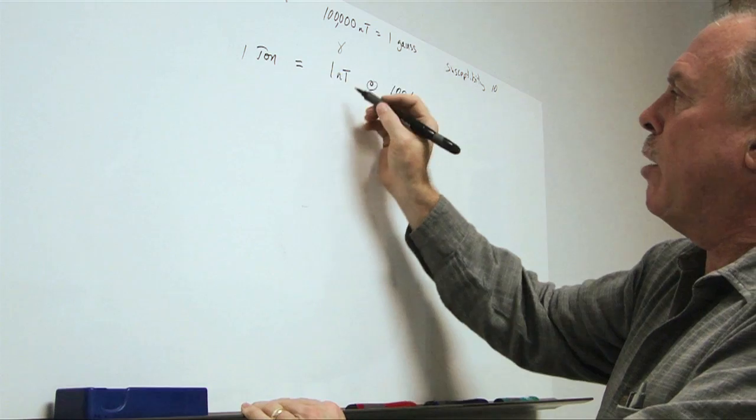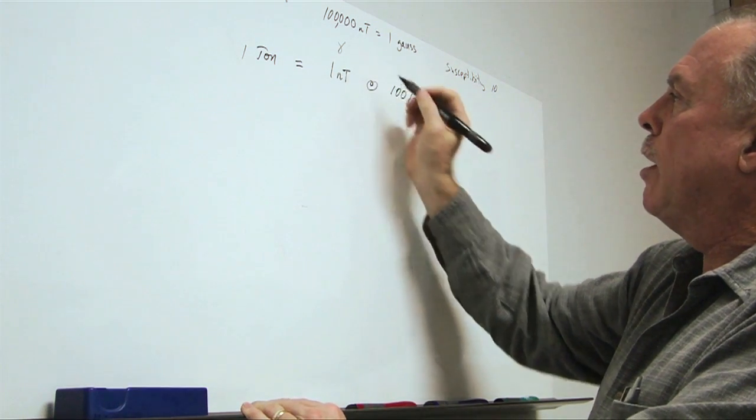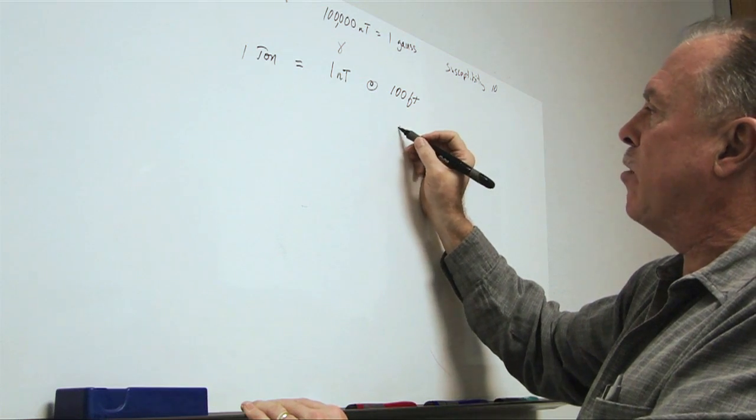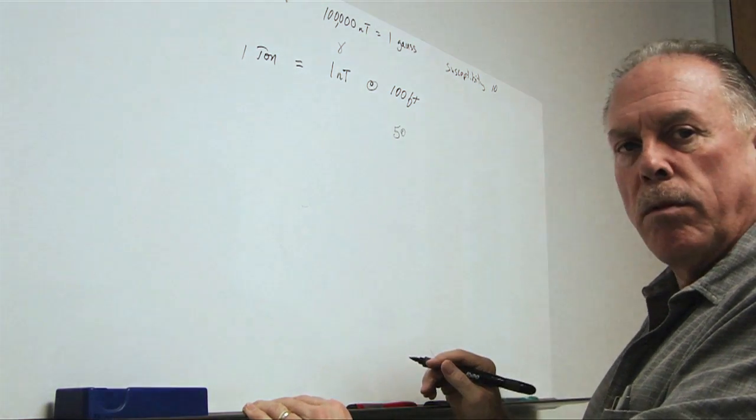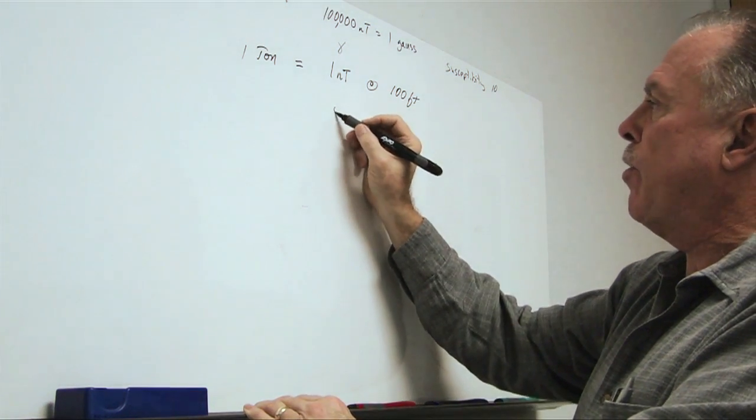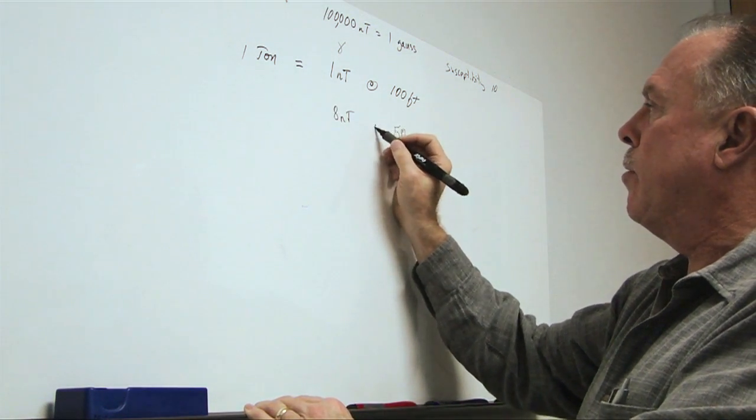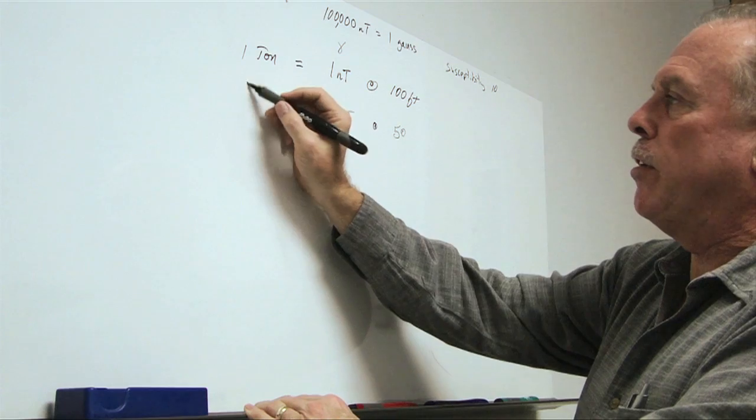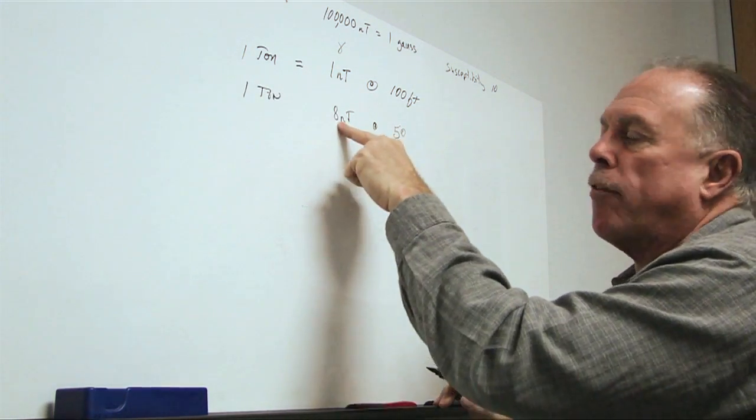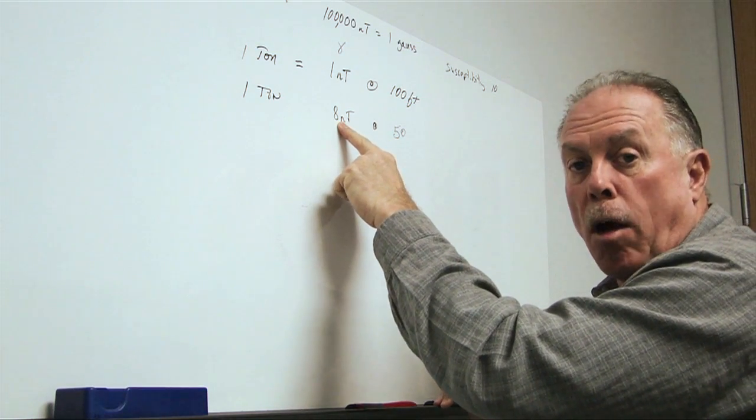So, if we have one ton equals one nanotesla at 100 feet, another way of writing this is if we went to 50 feet, we would have eight times larger field, eight nanotesla, one ton. So, as we cut the distance in half, we get a larger anomaly.